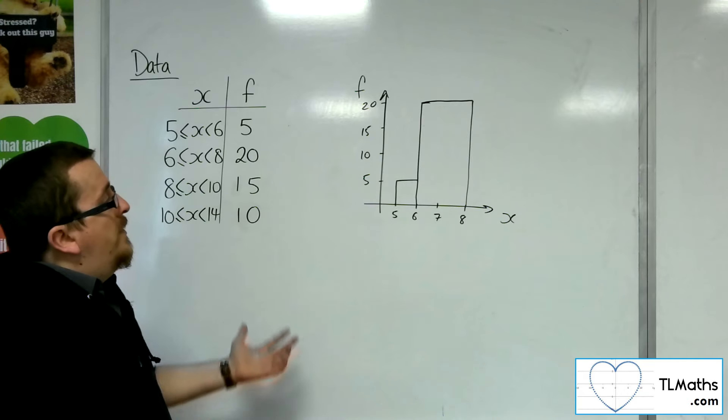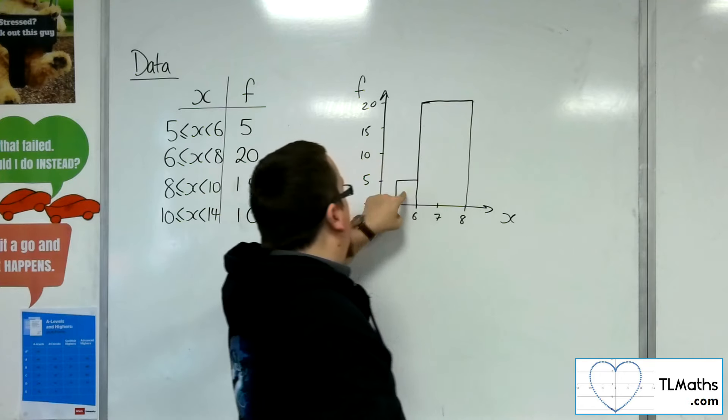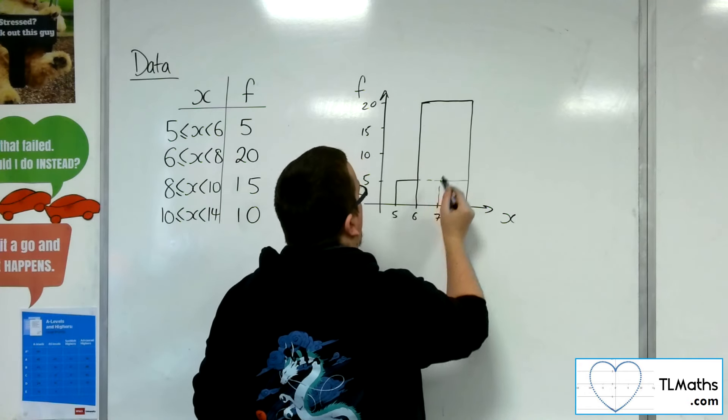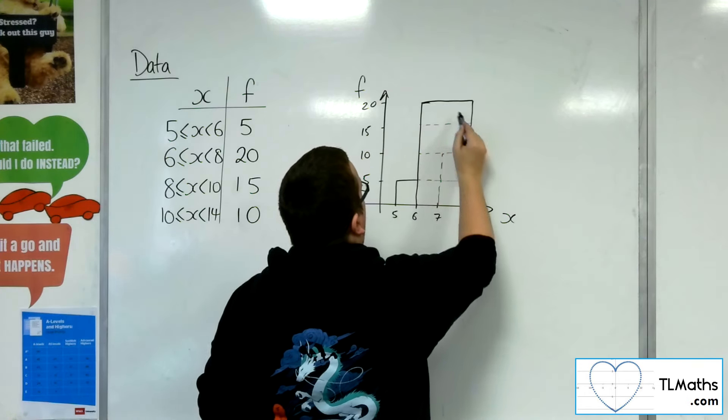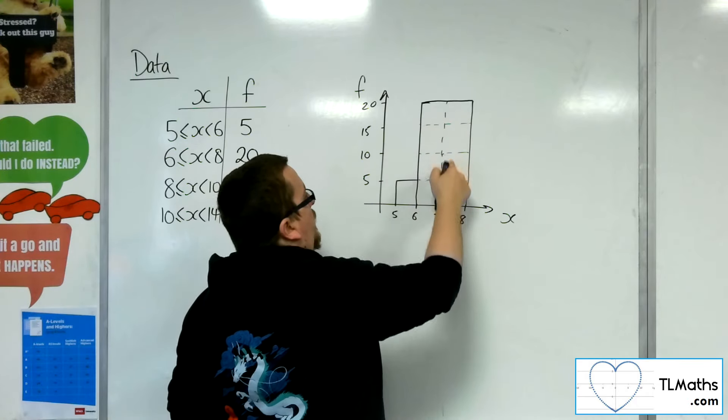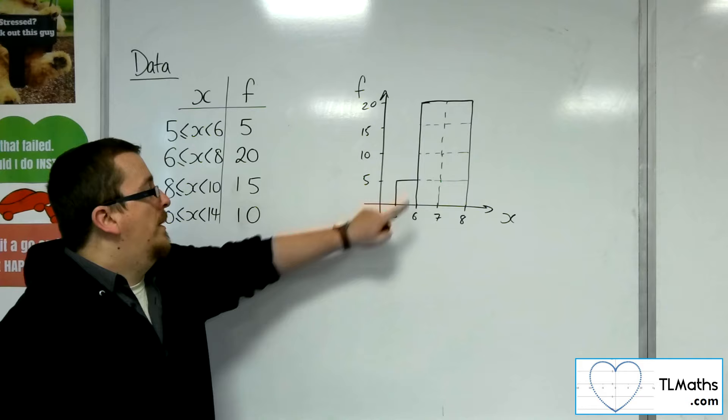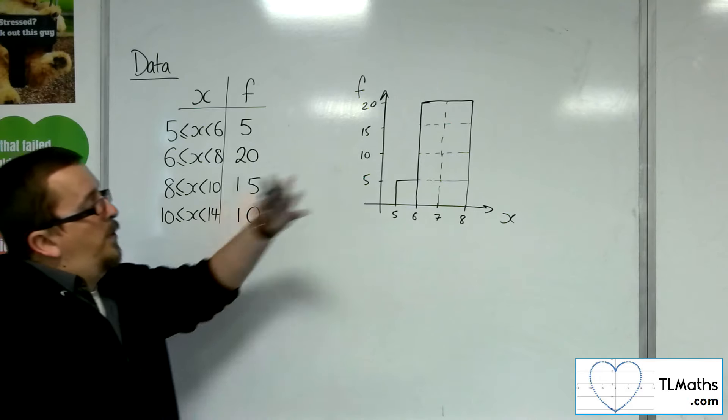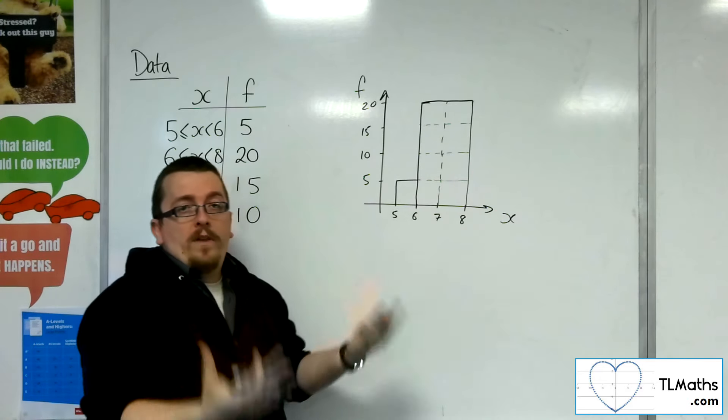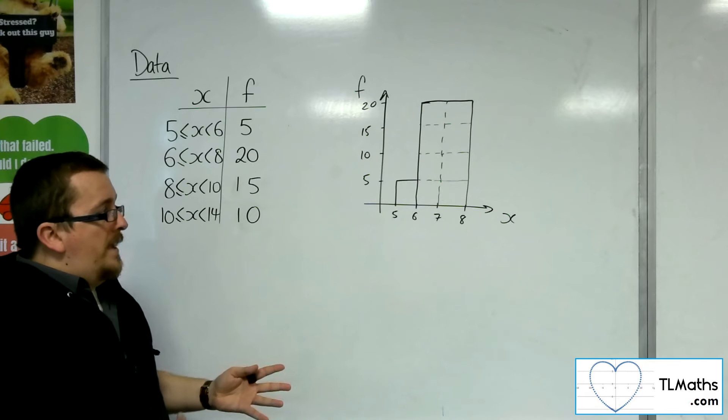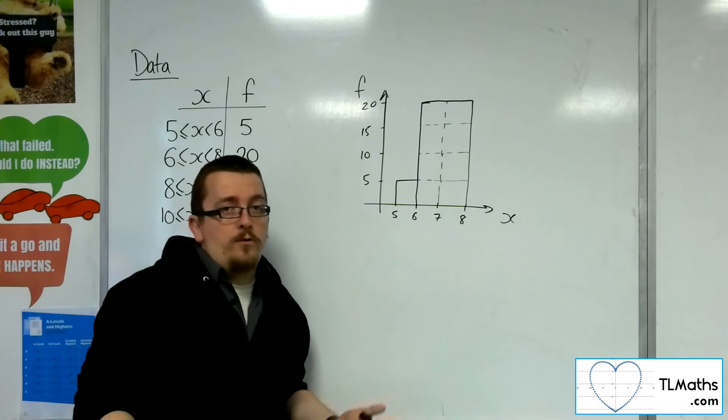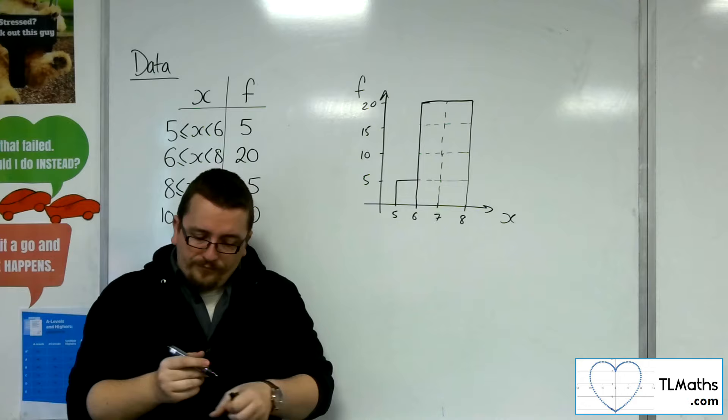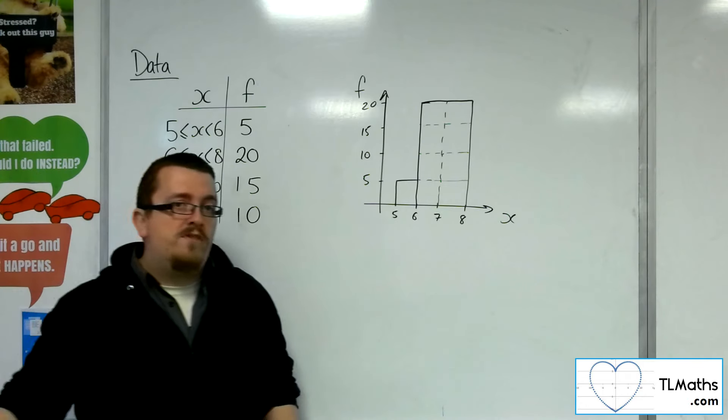But the problem is that this bar here looks considerably larger than that one there. In fact, if you have a think about how much bigger it is, we're talking 8 times larger than that one, when actually, frequency-wise, this group is actually 4 times bigger than that one. So if you plot just the histogram against the frequency, and you draw the graph like this, then your graph will look skewed, and it will look disproportionately favourable towards certain bars. So this is not the correct way to draw a histogram.